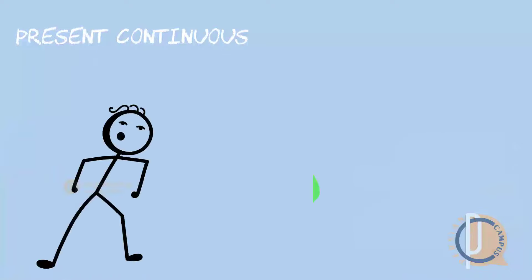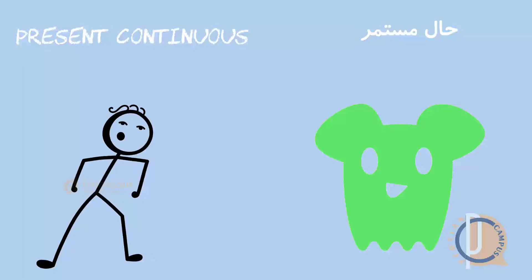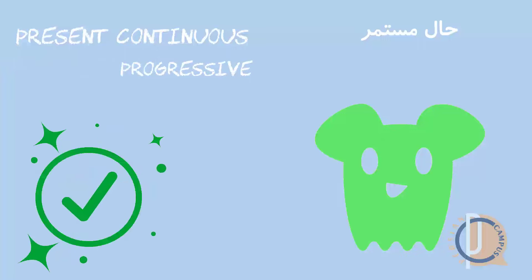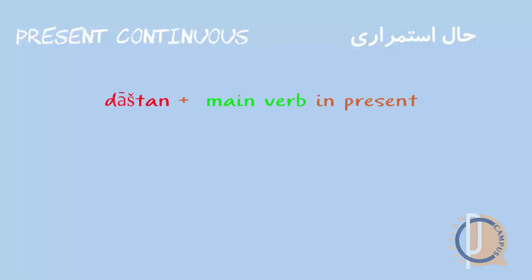Literally, people first resisted calling this new form the present continuous in Persian, calling it 'Hale Mustamer' or 'Mustamar,' which has the same meaning as present progressive or continuous. Little by little, they accepted that the language had changed. Now, 'Hale Stemrari' refers to this form and marks continuity in an action.